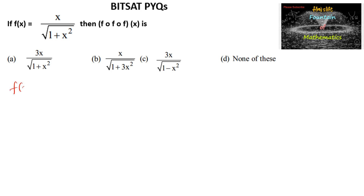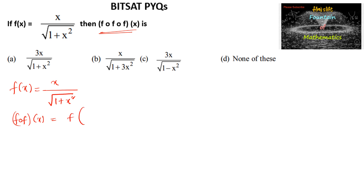If f of x is equal to x upon under root of 1 plus x square, we need to find f circle f circle f of x. Let us consider f circle f of x, which is equal to f of f of x, which is equal to f of x upon root of 1 plus x square.